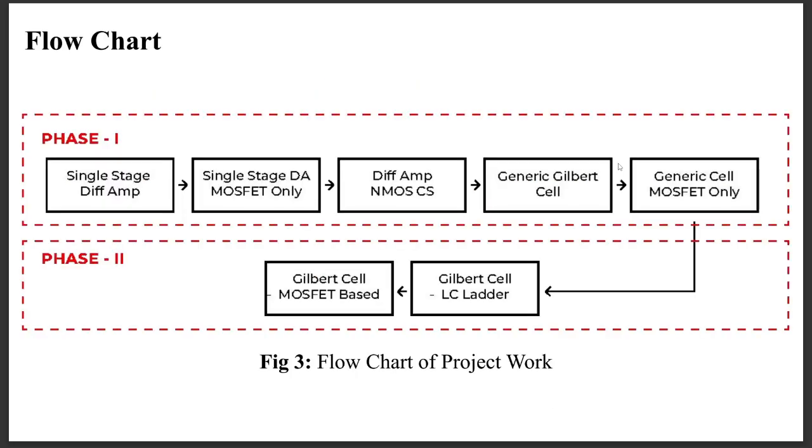As you can see, this is the flow chart of our entire project. For the first phase we studied single stage differential amplifier, then single stage differential amplifier MOSFET-only configuration, then differential amplifier with MOSFET current source configuration, then we went for general Gilbert cell and Gilbert cell with MOSFET-only configuration. In phase 2, we started with Gilbert cell LC ladder configuration and then we finally ended with Gilbert cell MOSFET-based configuration.